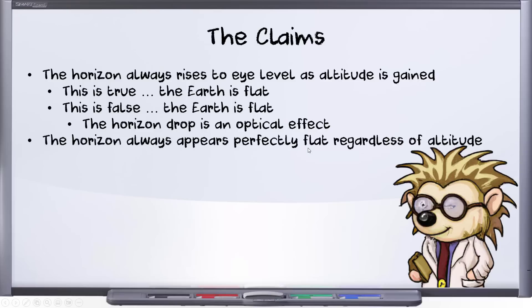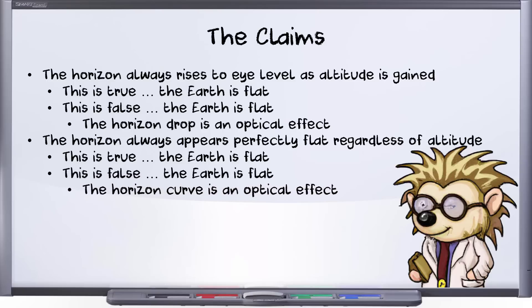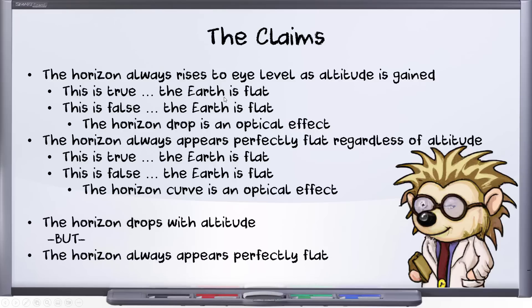Second, we'll consider the apparent straightness or curvature of the horizon. Once again, some insist that this is true and this proves that the Earth must be flat, while others acknowledge that we do see a curve, arguing that this does not in any way indicate an actual curve. But ultimately what has inspired me to make this series is a particular combination that seems to be fairly common: some people agree that the horizon definitely drops, but argue that the horizon still does not curve. As we investigate the two claims separately, I hope to address this combination in particular.